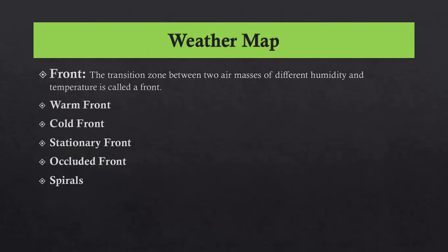What is a weather map? Understanding fronts can help you understand what kind of weather to expect when looking at a map. What is a front? The transition zone between two air masses of different humidity and temperature is called a front. There are four types of front: warm front, cold front, stationary front, and occluded front.